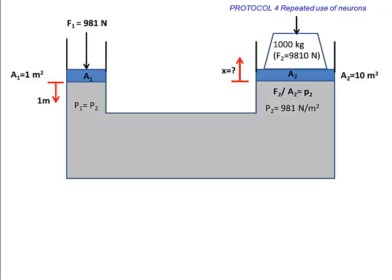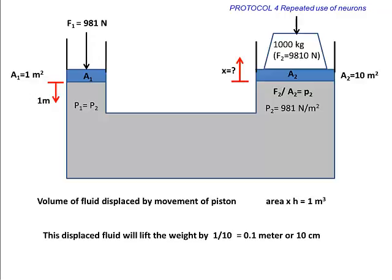Calculate the distance through which the weight can be lifted. Assume that the fluid is incompressible. The movement of piston 1 will displace 1 m³ of fluid. The displacement will lift the 1000 kg weight through 10 cm, since the area of piston is 10 m².